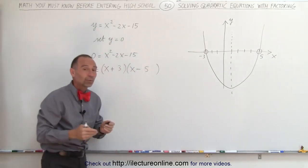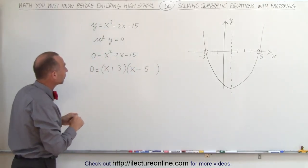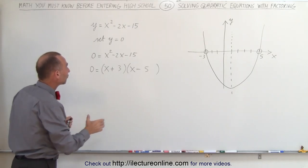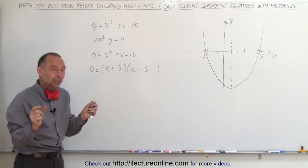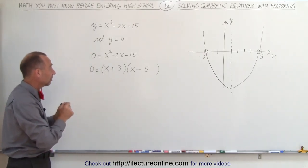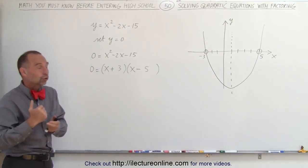So here what we did was we factored just like we did in the previous videos, and now we have two binomials multiplied together and they equal 0. Well, whenever you multiply two things together and you get 0, that means either one or the other should be 0.